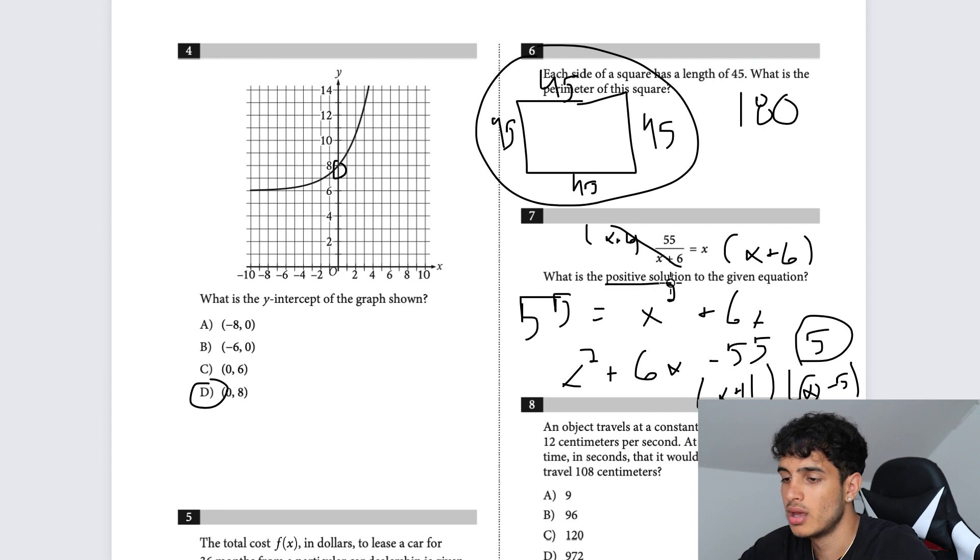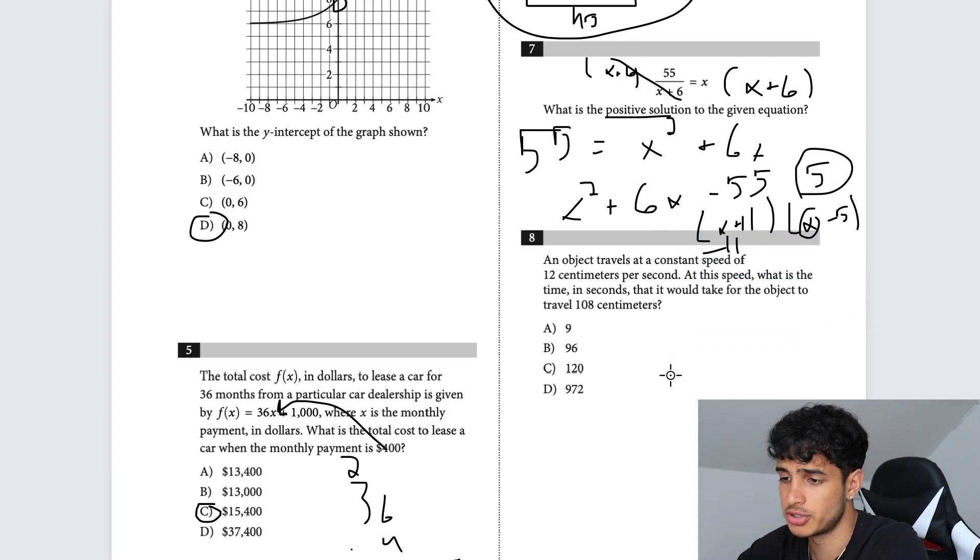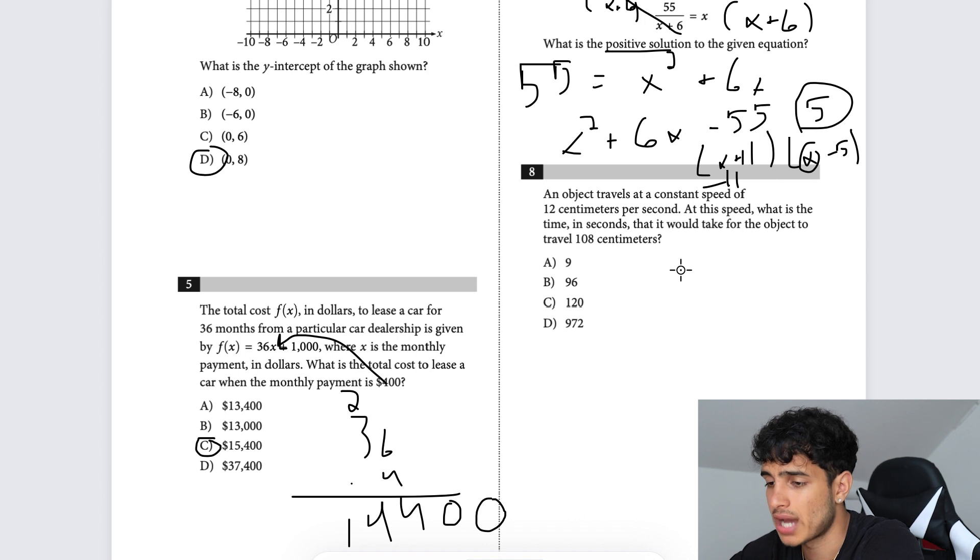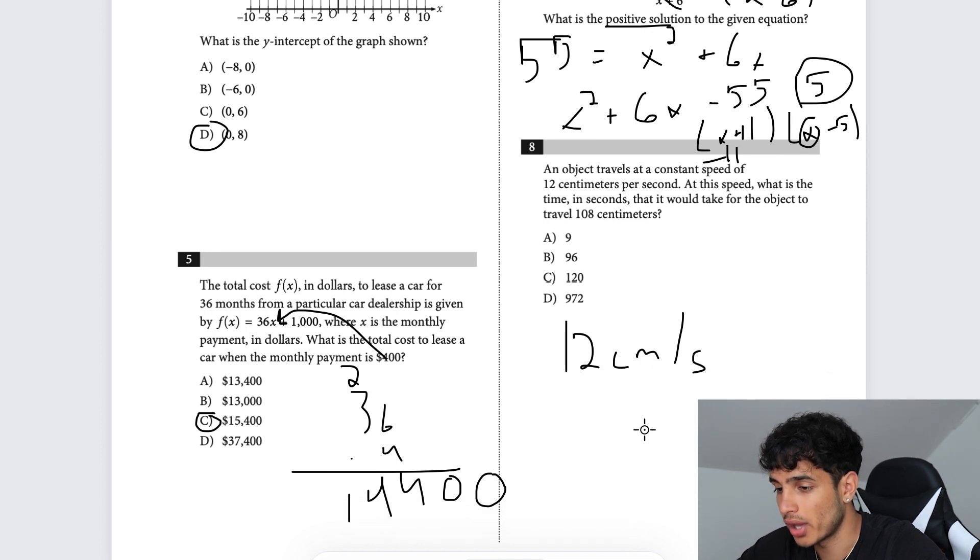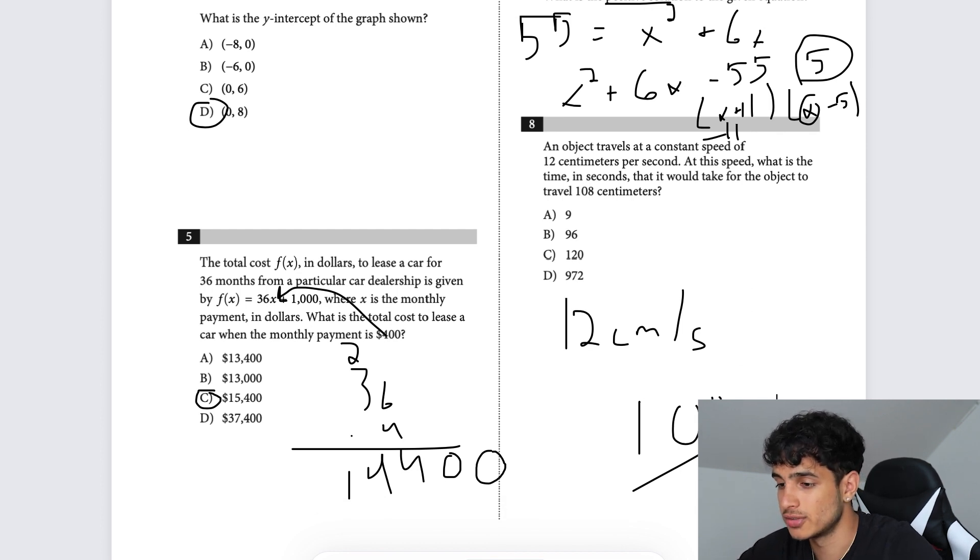An object travels at a constant speed of 12 centimeters per second. At this speed, what is the time in seconds that it would take for the object to travel 108 centimeters? If you're going 12 centimeters a second, to find when you get to 108, all you have to do is divide. 108 divided by 12 equals 9.